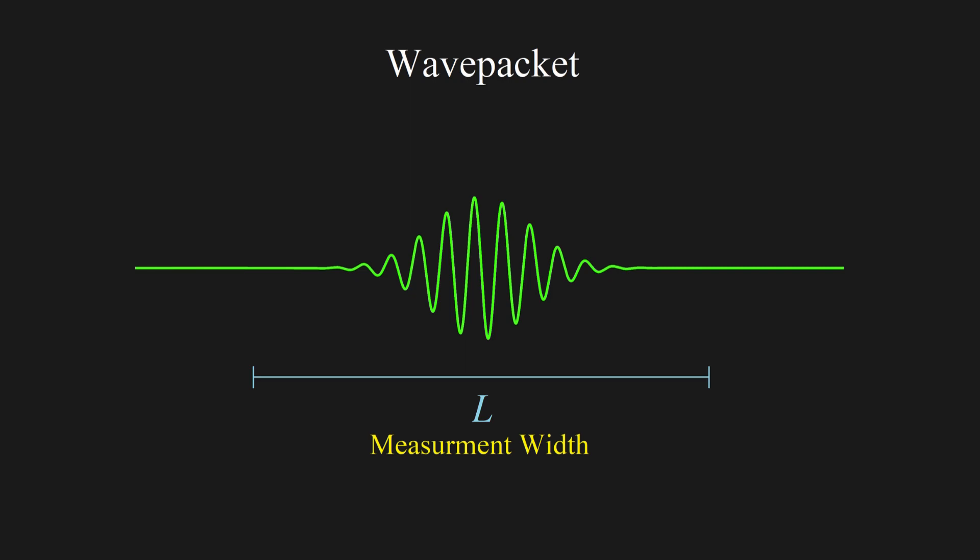If the wave packet was of some width in space, then we as observers, or as people who want to measure its position, won't be able to say exactly where the particle is. Is it here, here, or here? All what the theory allows us to know, or actually all what's there to know, is the probability distribution of the particle's position. In the middle of the wave packet, the probability is much higher than at the tails. This does not mean that we will definitely detect the particle in the middle.